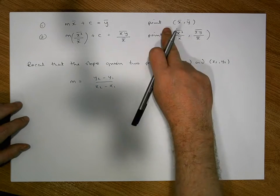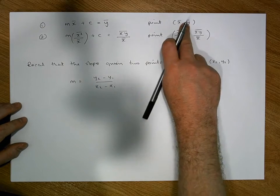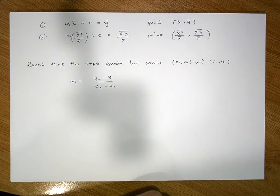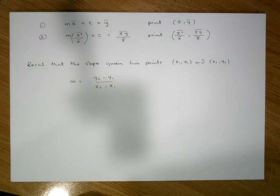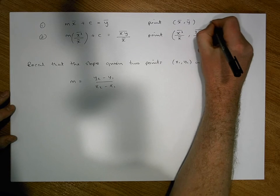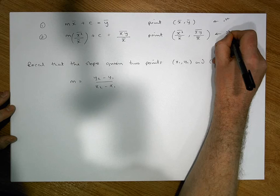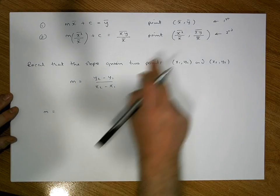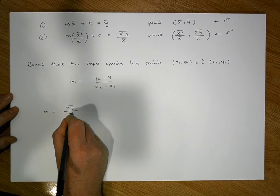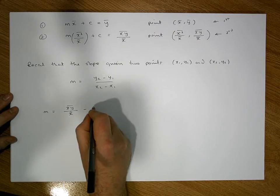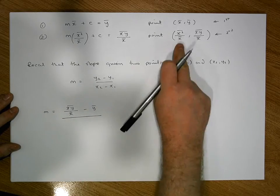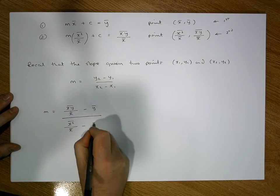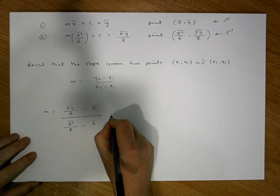Let's say (x̄, ȳ) is our first point and (x²̄/x̄, xȳ/x̄) is our second point — it doesn't matter which order we choose. So x₁ = x̄, y₁ = ȳ, x₂ = x²̄/x̄, y₂ = xȳ/x̄. The slope m equals y₂ − y₁ over x₂ − x₁, which is (xȳ/x̄ − ȳ) divided by (x²̄/x̄ − x̄).